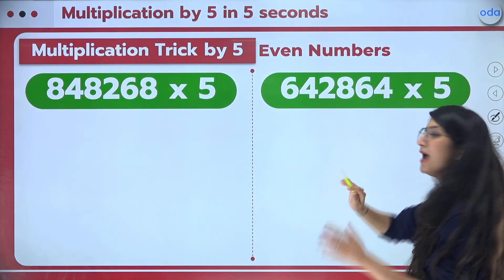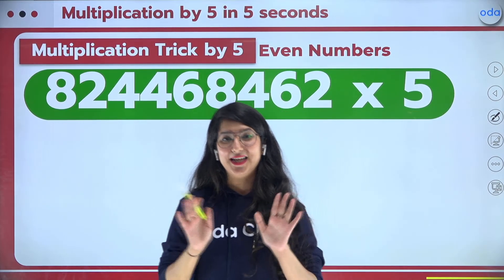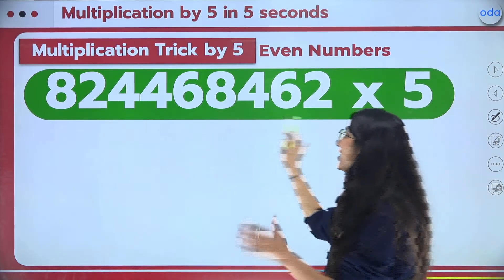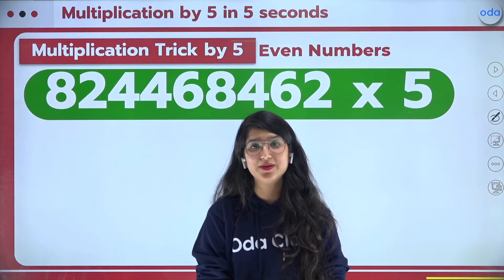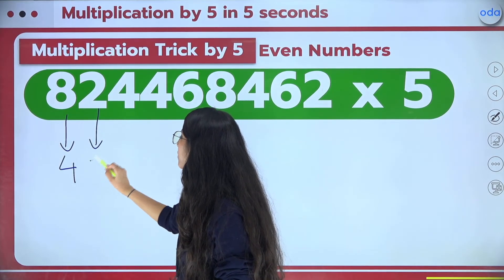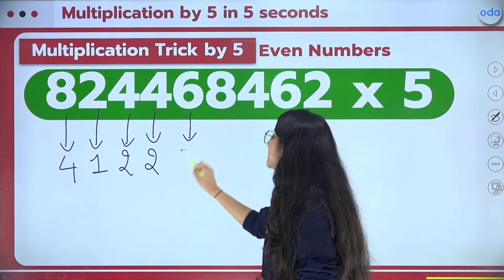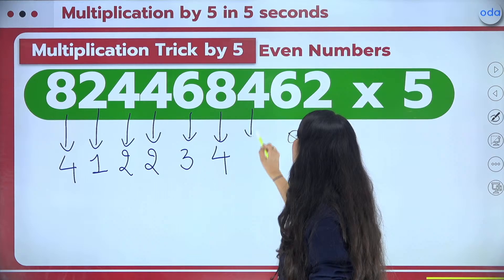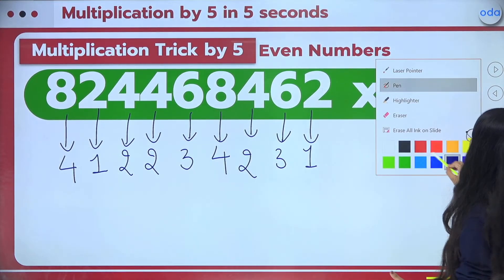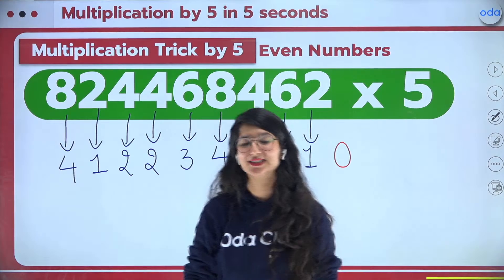Let's try one more question and level up — solve it in just 5 seconds. Check where each digit comes in the 2 times table: 8 at the 4th place, 2 at the 1st, 4 at the 2nd, 6 at the 3rd, 8 at the 4th, 4 at the 2nd, 6 at the 3rd, and 2 at the 1st. Then just put one 0 at the end and the answer is done in a fraction of seconds!